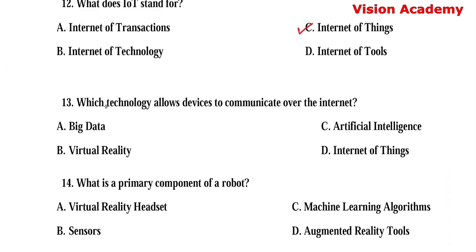Question number 13. Which technology allows devices to communicate over the internet? Option A: Big data. Option B: Virtual reality. Option C: Artificial intelligence. Option D: Internet of things. Here, option D, internet of things, is the right answer.